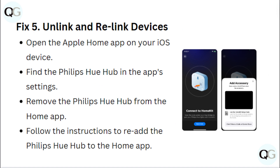5. Unlink and relink devices. Open the Apple Home app on your iOS device. Find the Philips Hue Hub in the app settings and remove it from the Home app. Follow the instructions to re-add the Philips Hue Hub to the Home app.